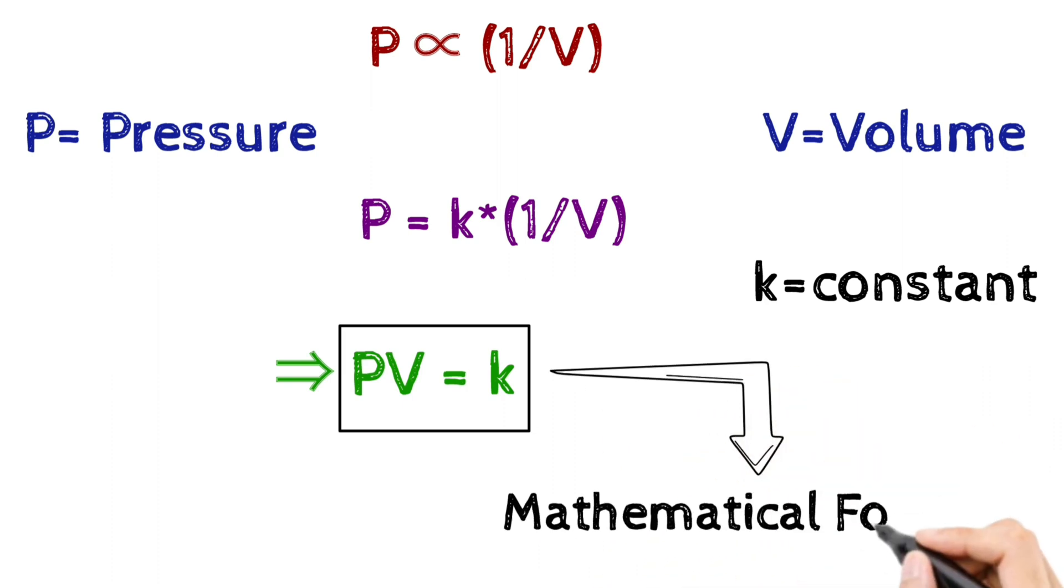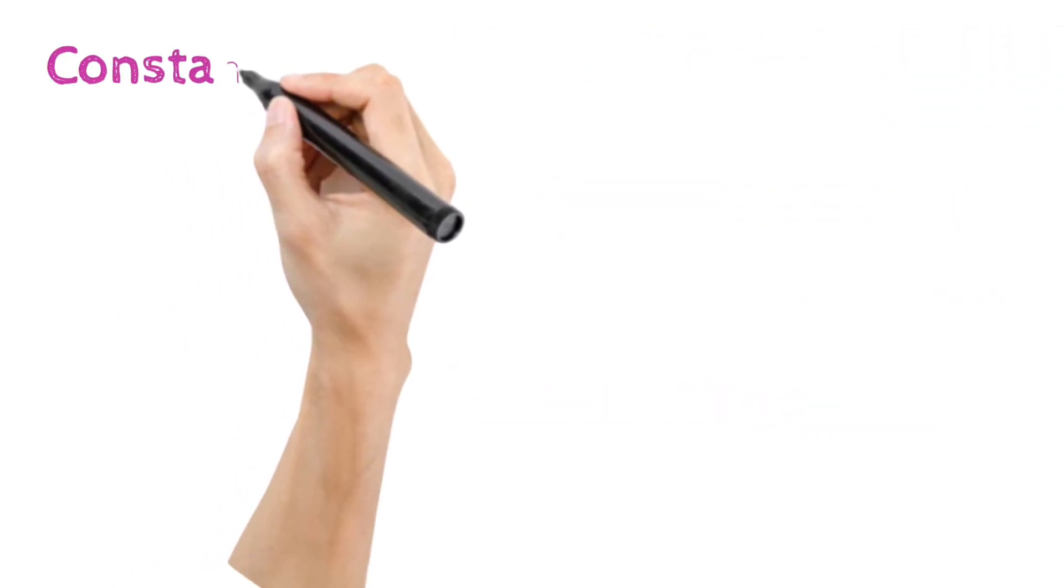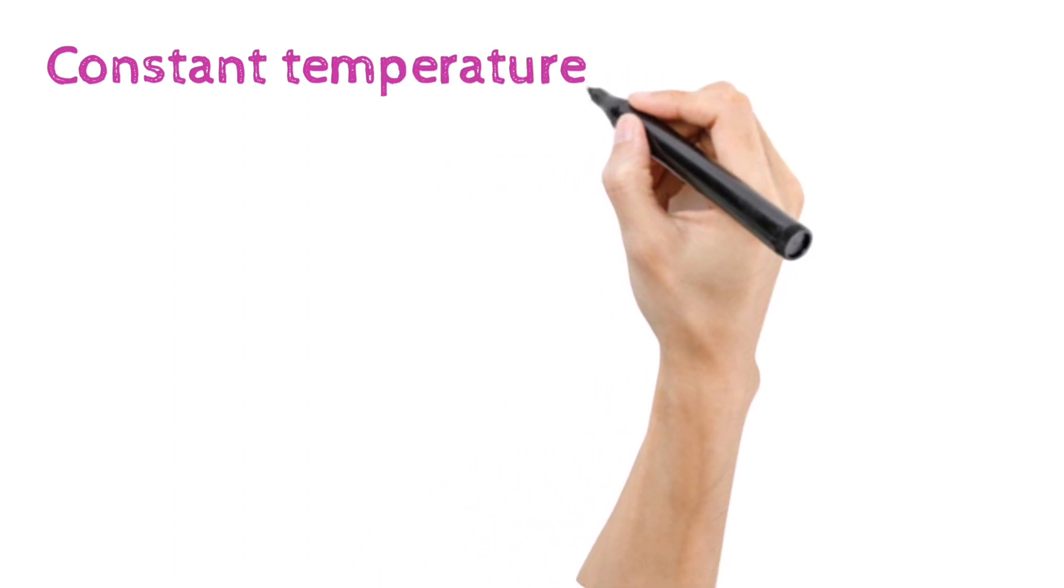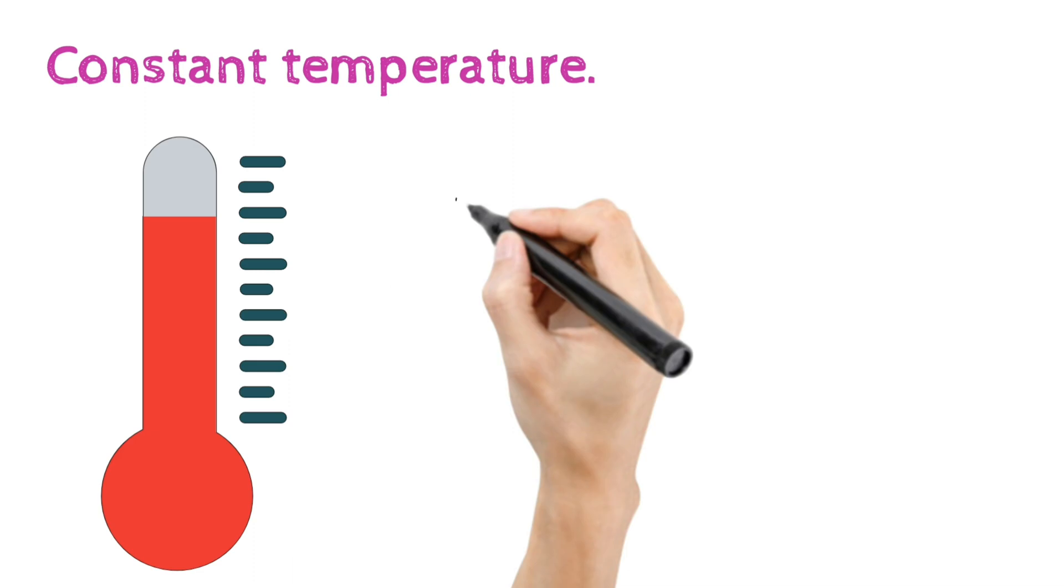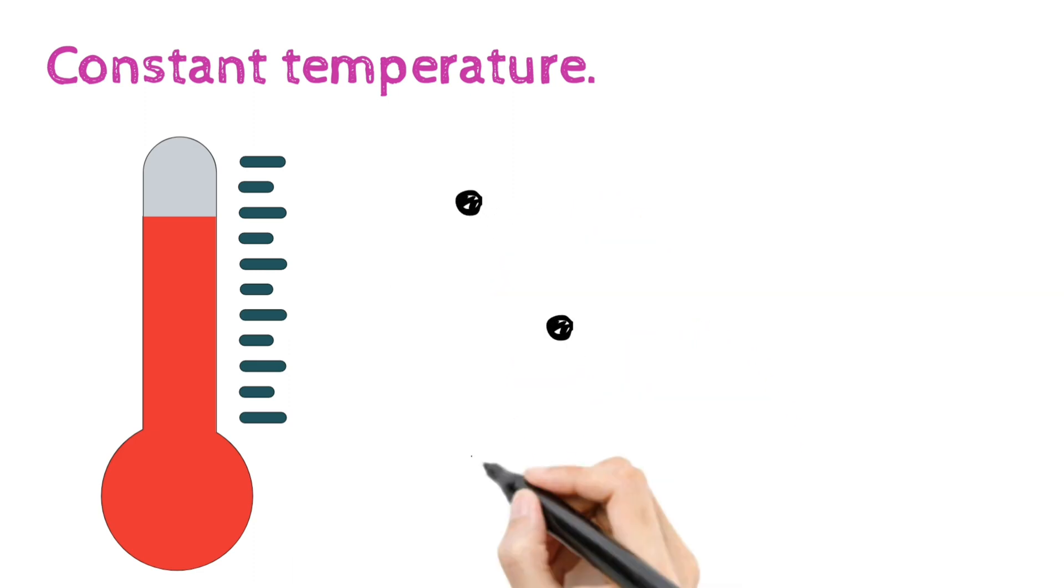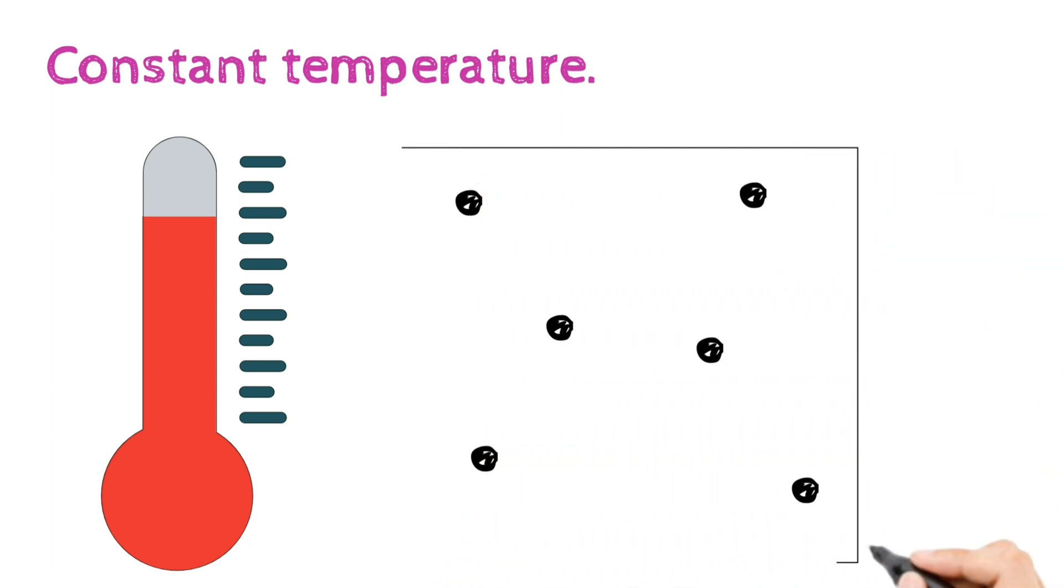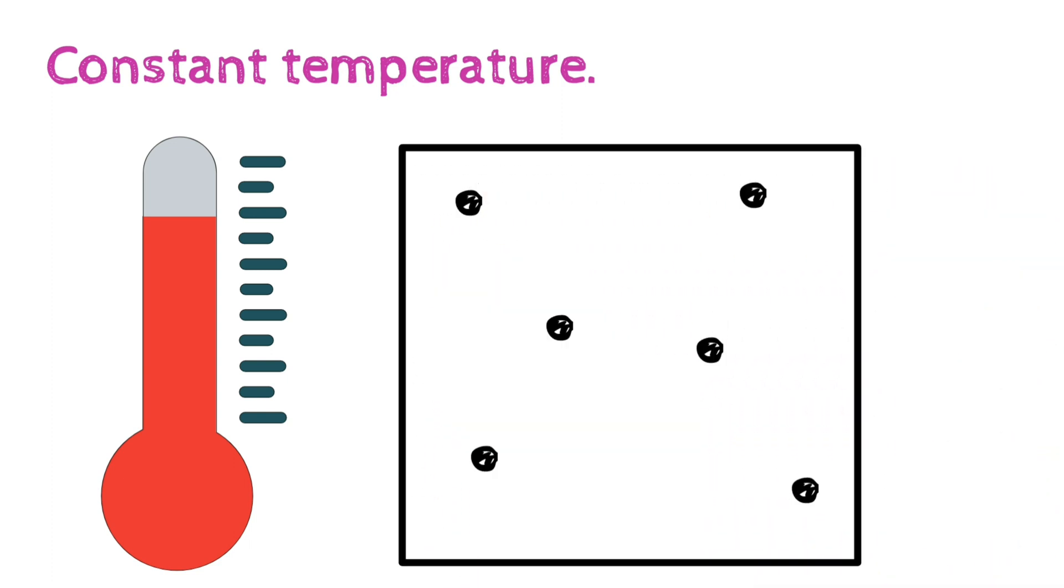This is the mathematical formula of Boyle's Law. Now you might be wondering about the word constant temperature in the statement of Boyle's Law. That's because if in any case the temperature increases, the molecules of the gas will move further and further away and as a result the volume of the gas will increase. So the word constant temperature in the statement of Boyle's Law is a very important point to remember.